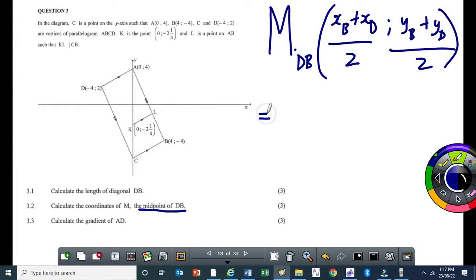So your midpoint of DB is gonna be equal to x at B plus x at D over 2. The y value will be equal to the y at B plus the y at D all over 2. You get a mark for writing out the formula. I think in this case you might get a mark for the formula. So then the midpoint of DB, what is my x at B? x at B is 4, so that would be 4 plus x at D, that's negative 4, all over 2. Then y at B is minus 4, y at D is 2.